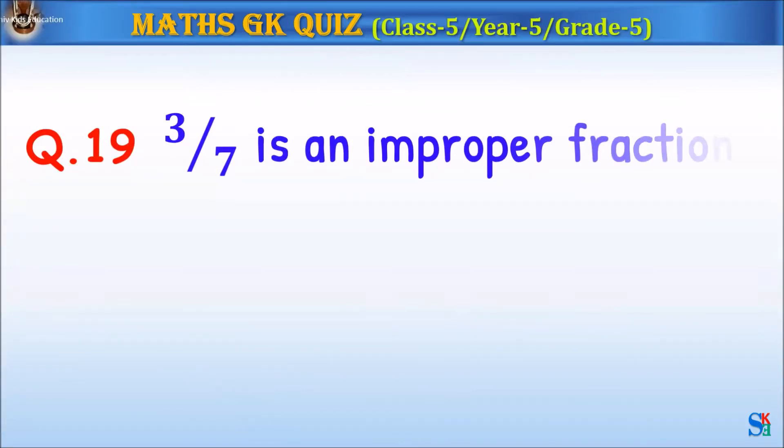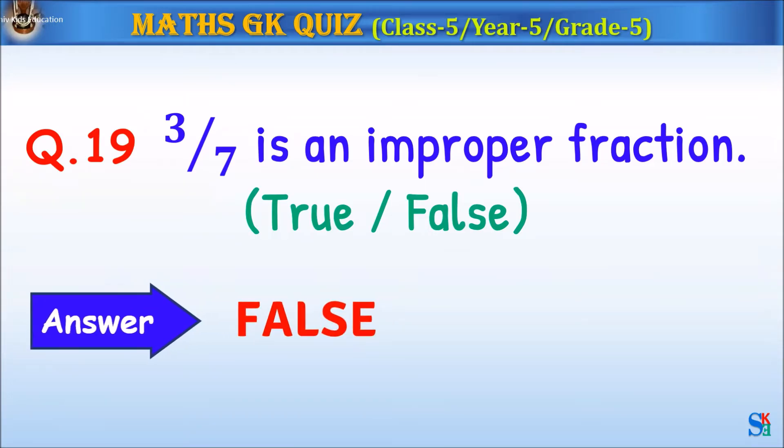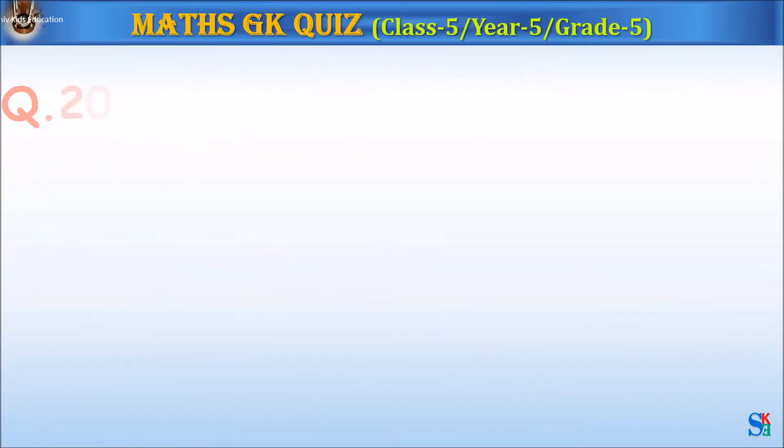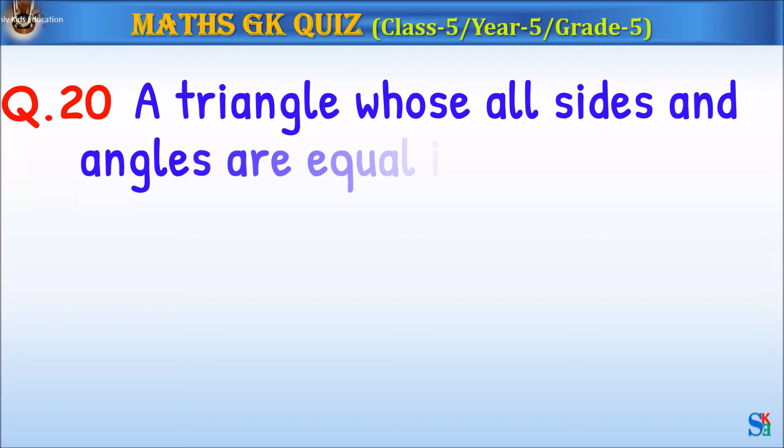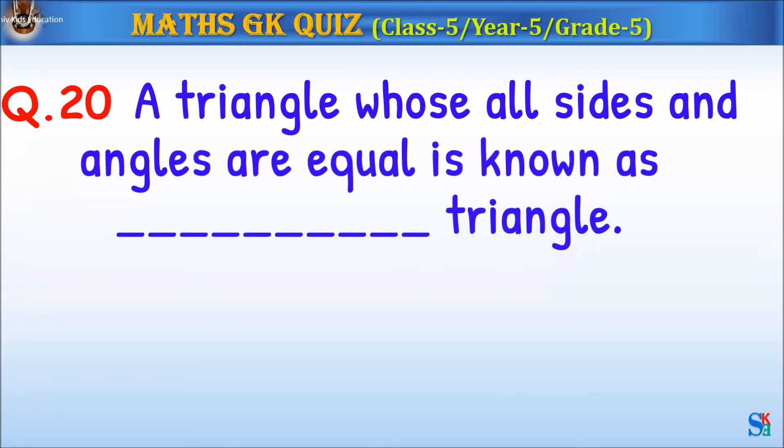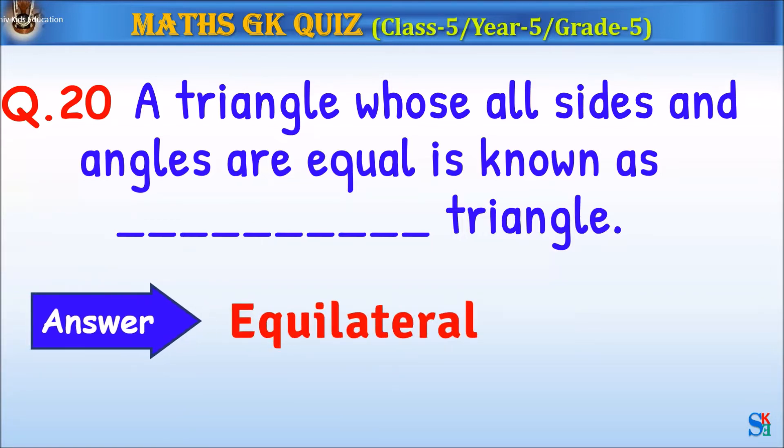Question 19: Three sevenths is an improper fraction, true or false? The answer is false. Question 20: A triangle whose all sides and angles are equal is known as what triangle? The answer is equilateral.